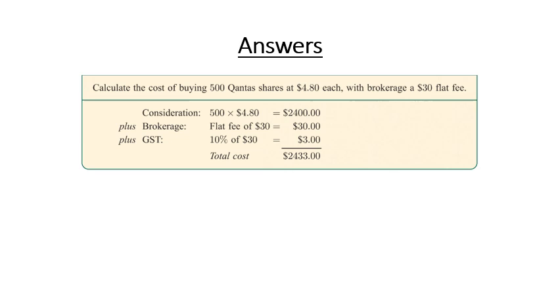So let's see how you went. We've got our 500 Qantas shares, and we're paying $4.80 each. So that's where we get our $2,400. So that's just the shares times by the price of each share.